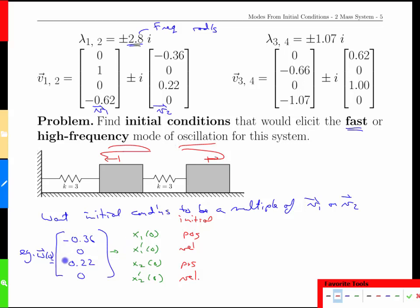Going back to our logic here about the initial conditions, of course we don't have to pick these values, it could be a multiple of those or we could also have picked a multiple of v1, but the challenge there is that we don't know how to necessarily set velocities.